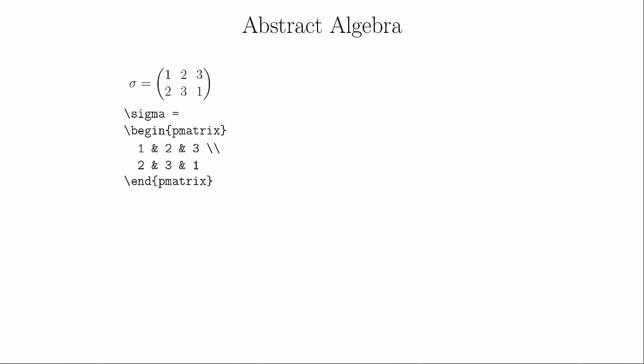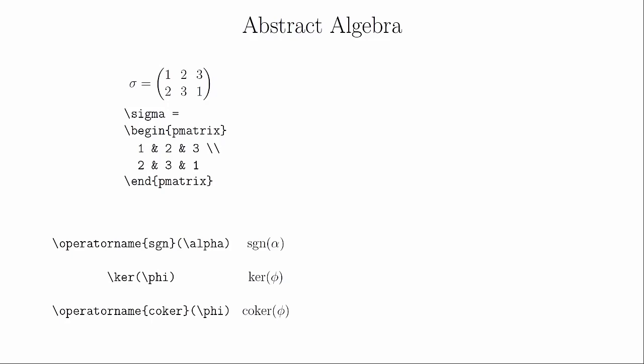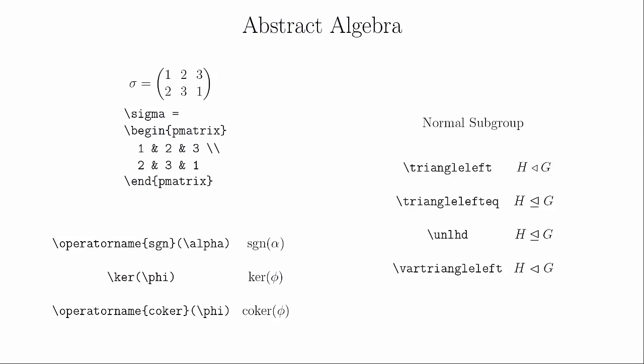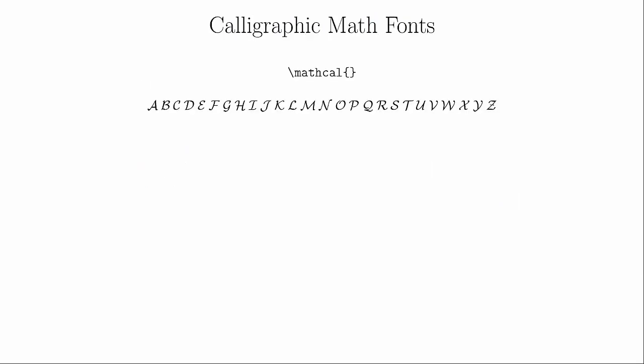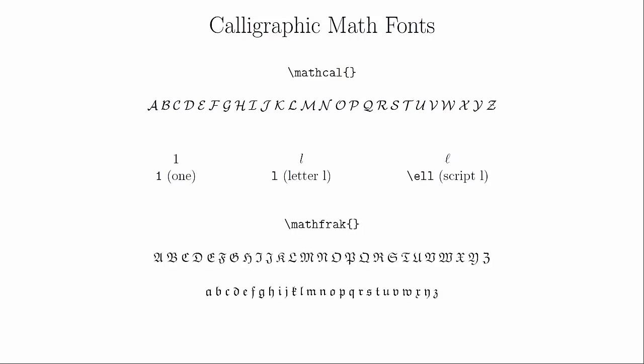Abstract algebra has a lot of notation, but it turns out that you've seen most of it already. For example, the two-line notation for permutations is just a pmatrix. There are also a lot of special functions — like signum, kernel, and co-kernel — but these either already exist or you can create them using \operatorname. Perhaps the only important new symbol is the normal subgroup symbol, which has several versions. There is a math calligraphy font for script letters (\mathcal), which only has capital letters. You may also be interested in \mathscr for a cursive letter L. There's also the Fraktur font with both capital and lowercase letters using \mathfrak.